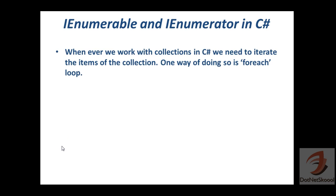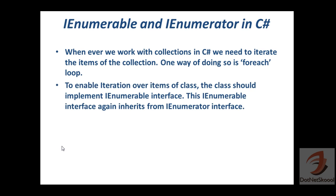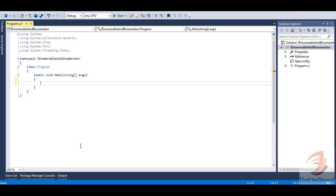Whenever we work with collections in C# we need to iterate the items of the collection. One way of doing so is a for-each loop, which we will see in our example. To enable iteration over items of a class, the class should implement the IEnumerable interface. This IEnumerable interface in turn inherits from IEnumerator interface. So if you have a collection class with many elements and need to iterate or print those elements one by one, you need to implement IEnumerable.